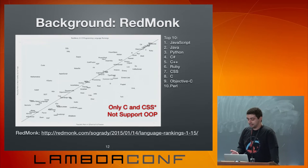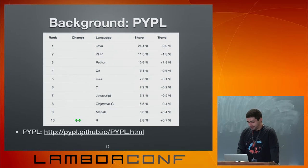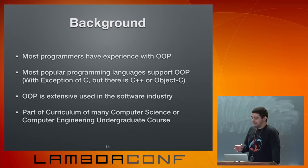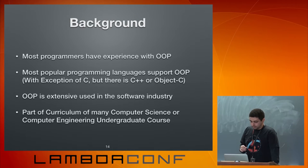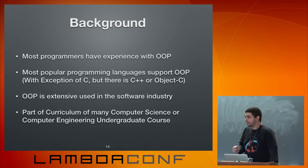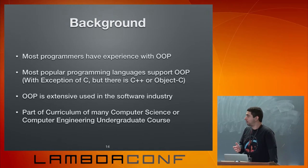CSS doesn't support OOP, but CSS is not really a programming language. Looking at the PyPL ranking, only C in the top ten doesn't support OOP. So most programmers have some experience with object-oriented programming — they work with popular languages like C++, Java, Python, Ruby. And with the exception of C, you even have the option to use C++ or Objective-C to get support for object-oriented programming.